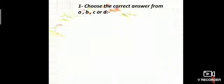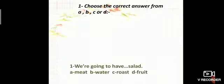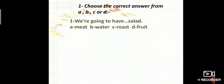We have number 1. Choose the correct answer from A, B, C or D. We are going to have salad. Meat, water, roast, fruit. The right answer will be fruit. We are going to have fruit salad.